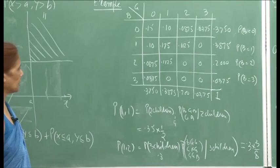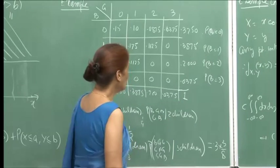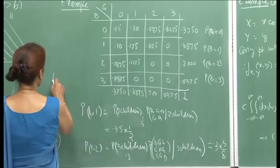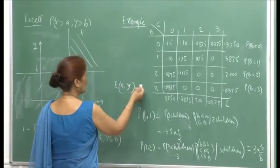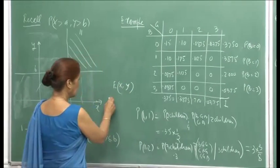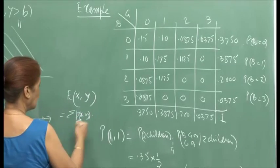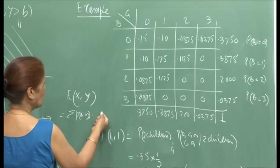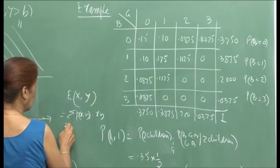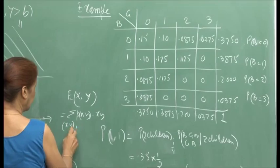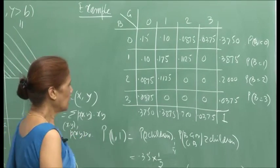Once you find the joint distribution, you find the marginals and can compute all other quantities: expectation, variance, and so on. For the joint expectation E[XY], you multiply x·y by p(x,y) and sum over all positive values.